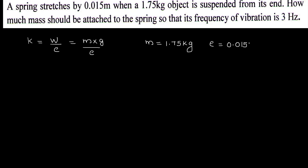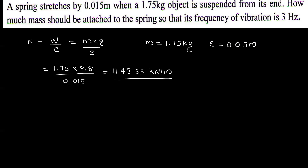Substituting values: 1.75 into 9.8 divided by 0.015. That is equal to 1143.33 N/m.